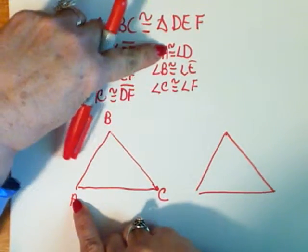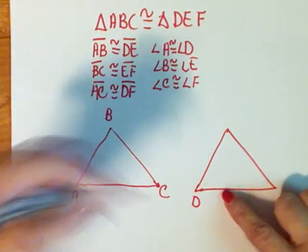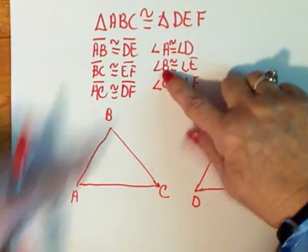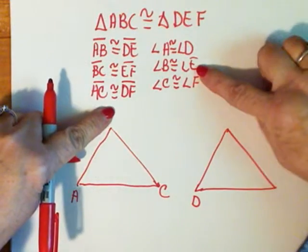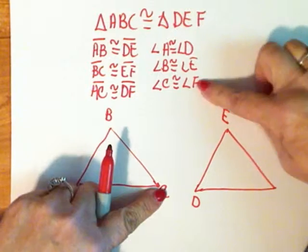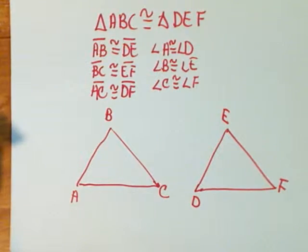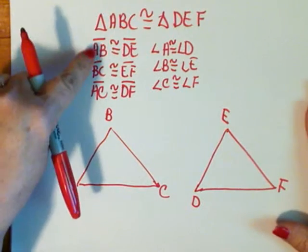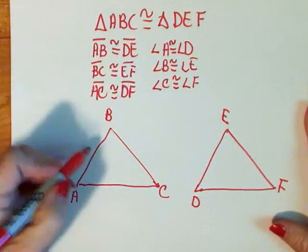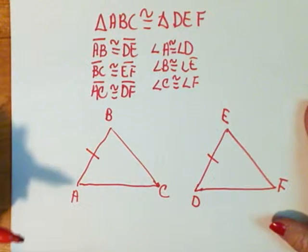Angle A is congruent to angle D, so I'm going to make this angle D. Angle B then is congruent to angle E. Angle C then is congruent to angle F. Now let's mark up the parts that we know. I know side AB is congruent to DE, so AB and DE I'll make one hash mark there.